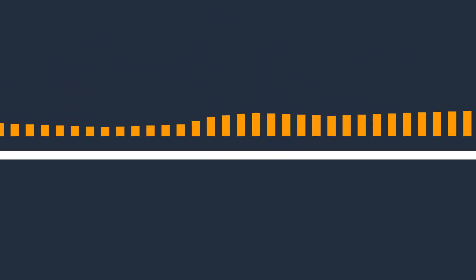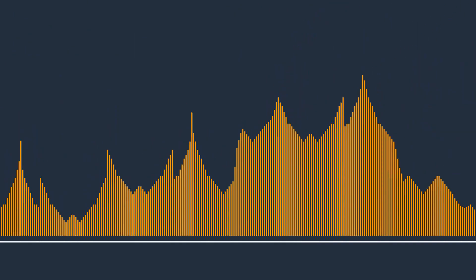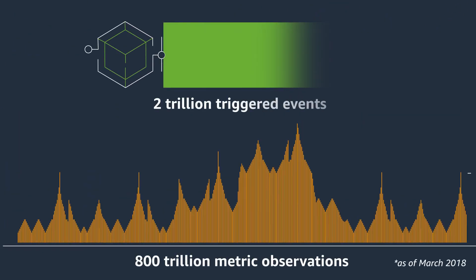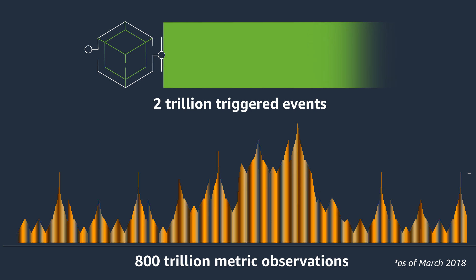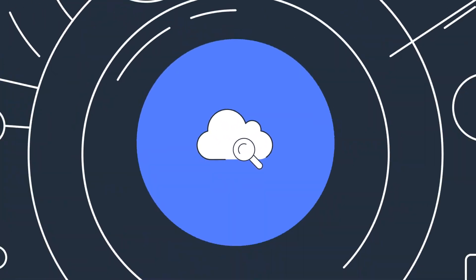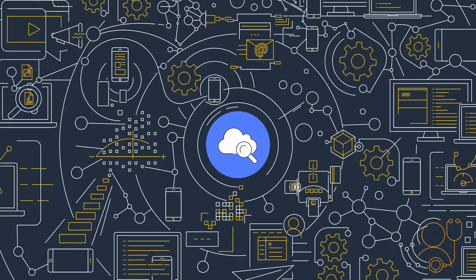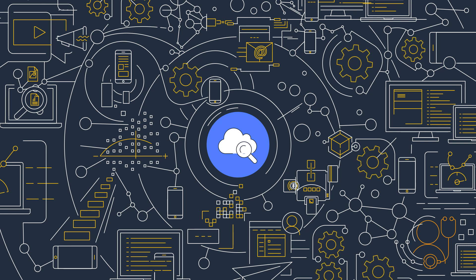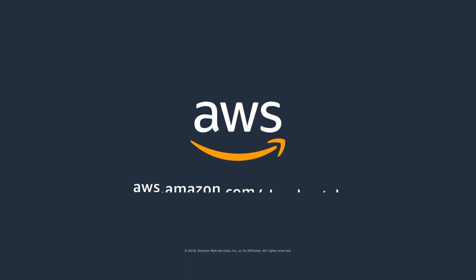Today, Amazon CloudWatch monitors more than 800 trillion metric observations, triggers more than 2 trillion events, and ingests more than 50 petabytes of logs per month. With Amazon CloudWatch, it is easy to get started. There's no upfront commitment or minimum fee — you simply pay for what you use. Turn on the insight by visiting aws.amazon.com/cloudwatch.